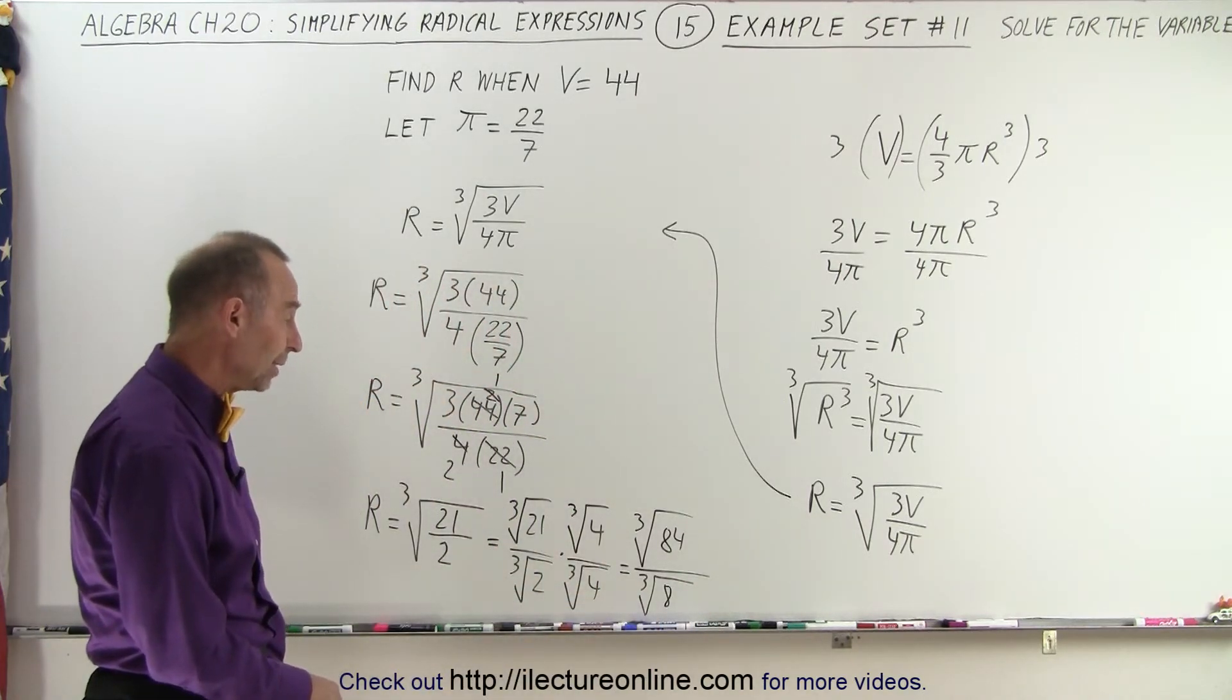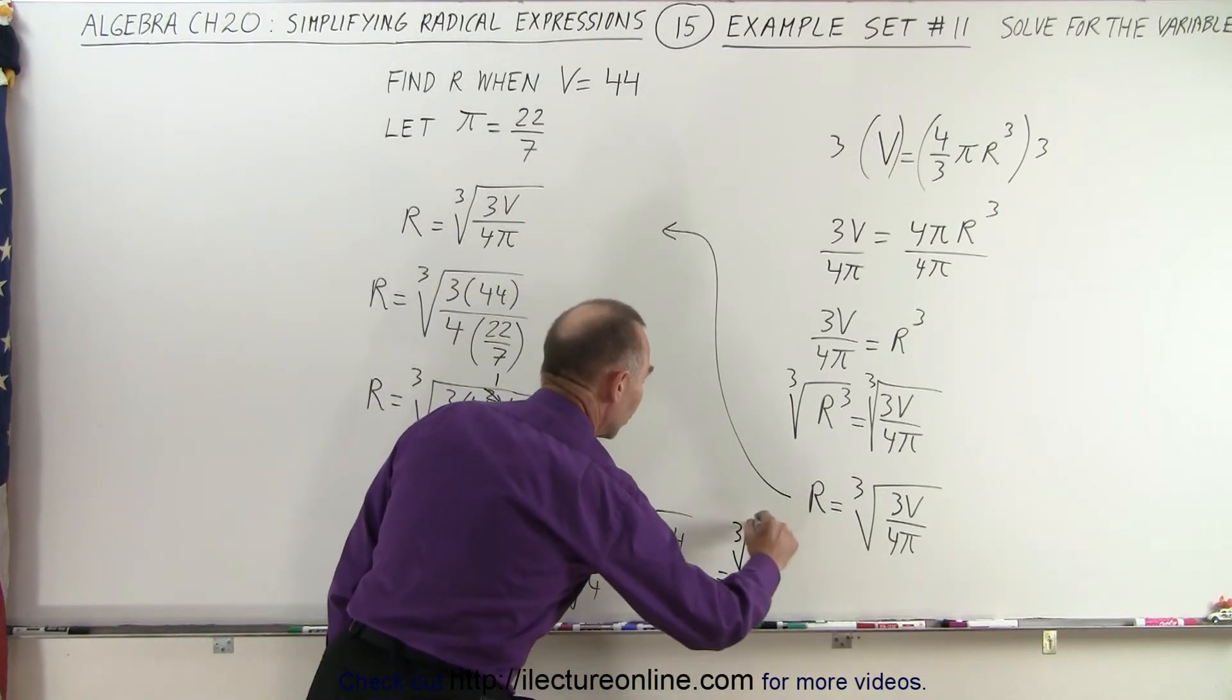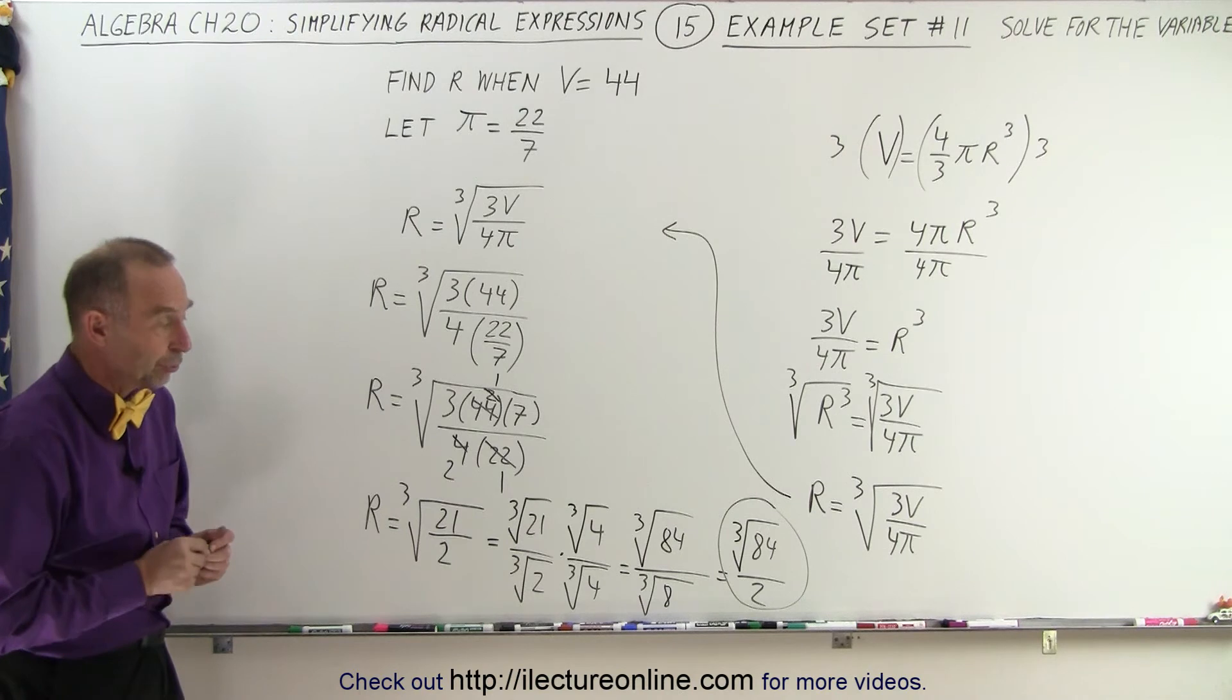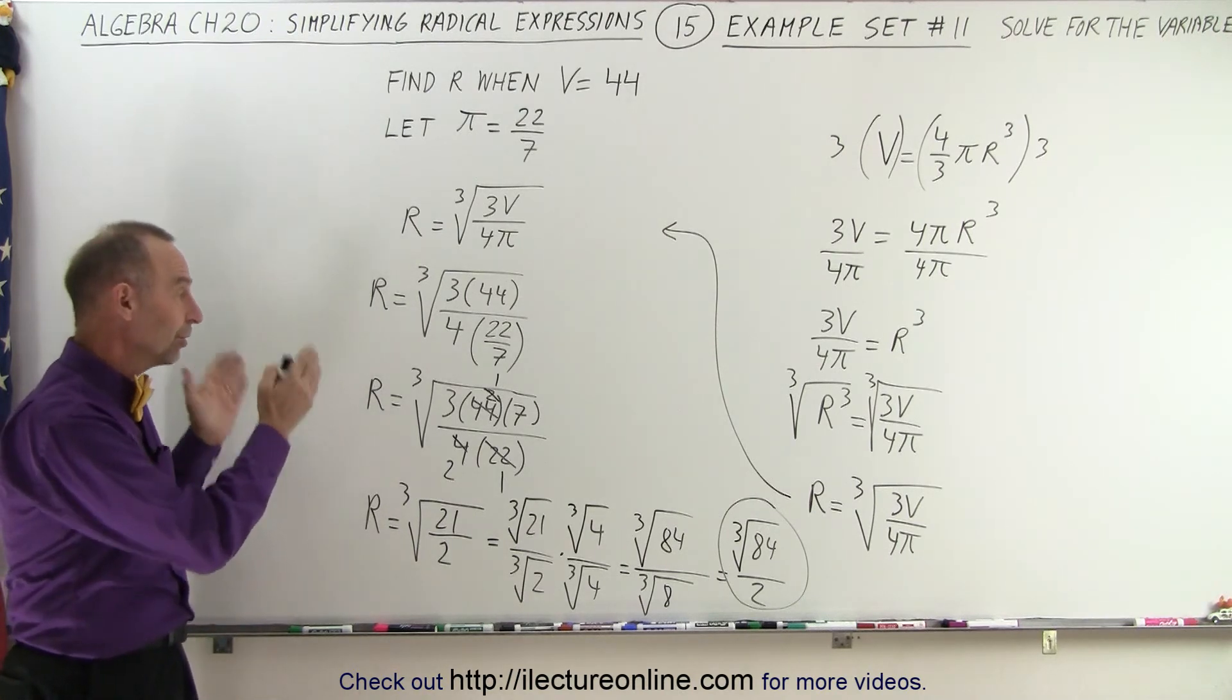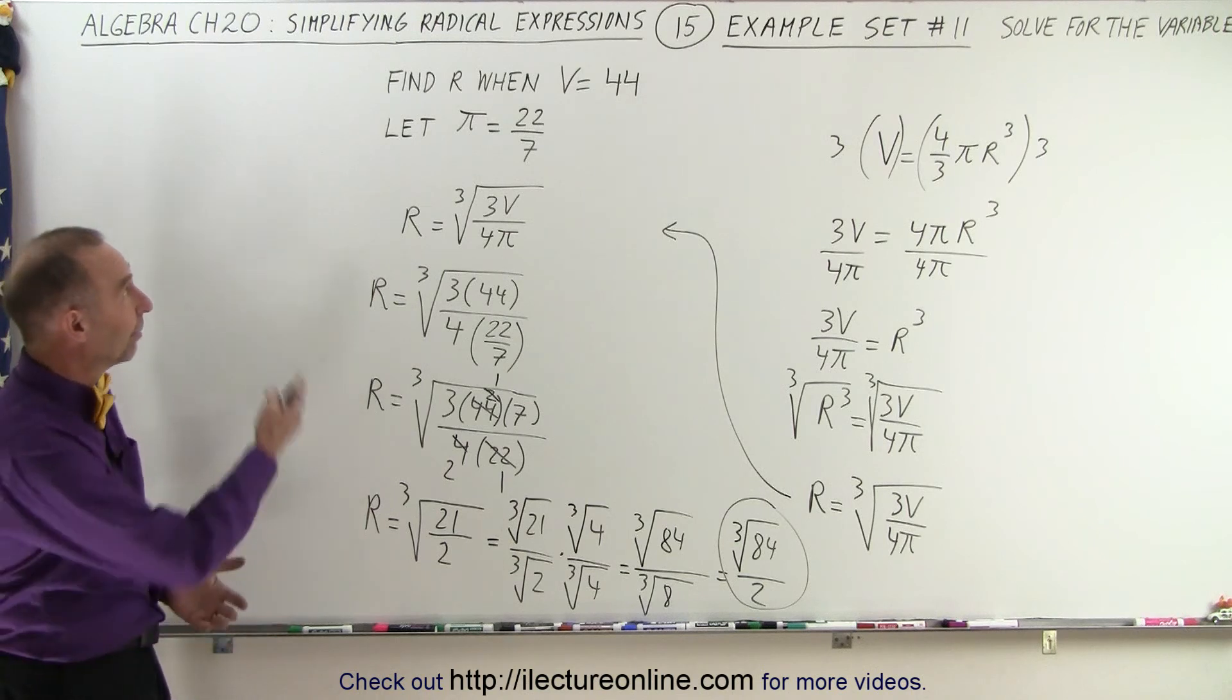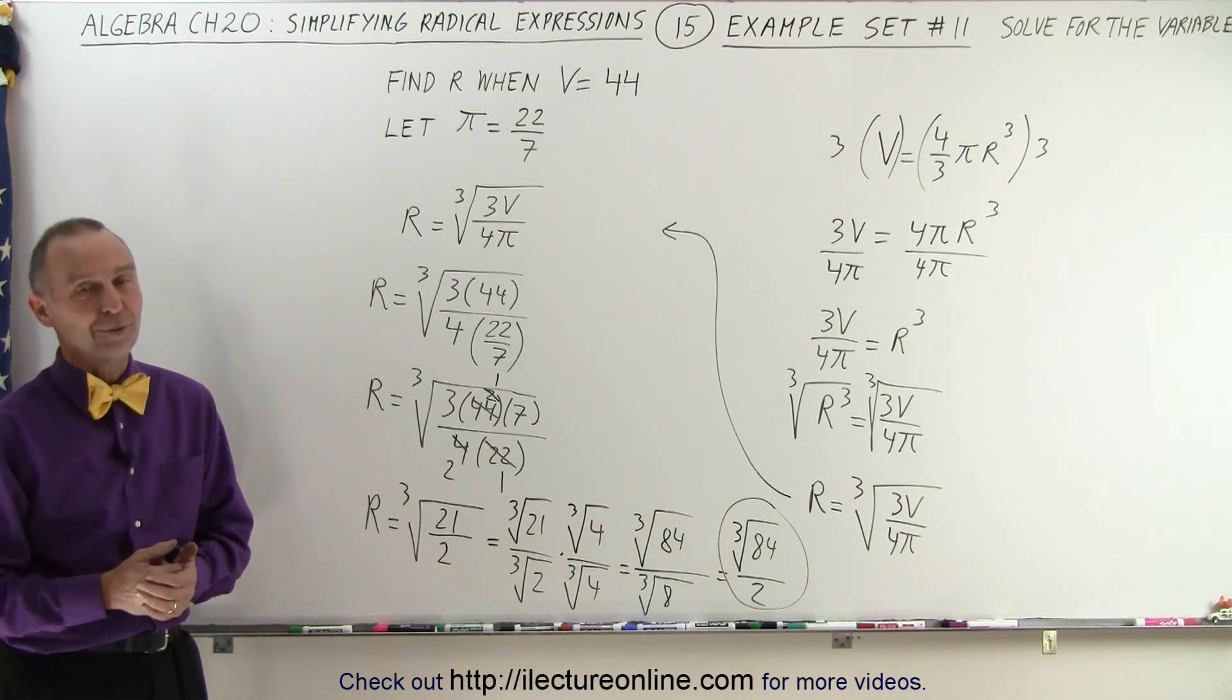I don't think we can do anything with anything else, so we simply leave this as the cube root of 84, divided by 2 as the most simplified form of that particular problem. Of course, if we had a calculator, we can actually calculate what that is equal to, but for this exercise, it's sufficient to simplify it as much as we possibly can, like we've been doing in this set of simplifying radical expressions. And that is how it's done.